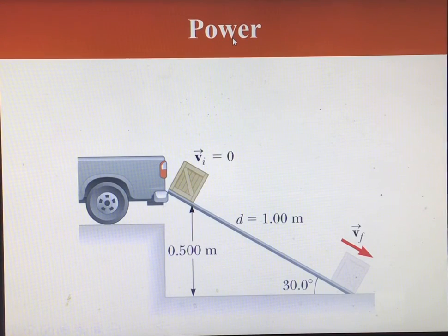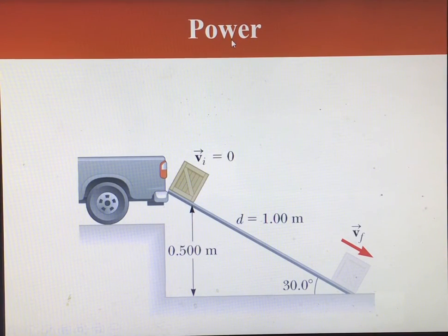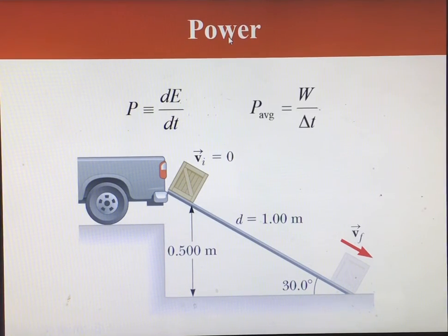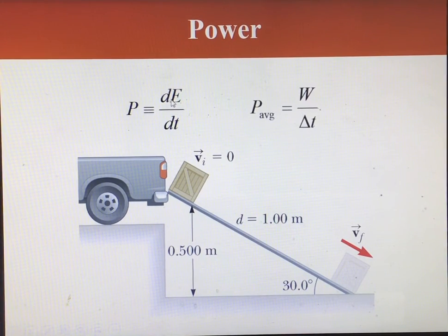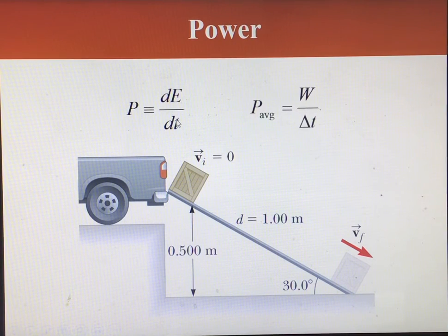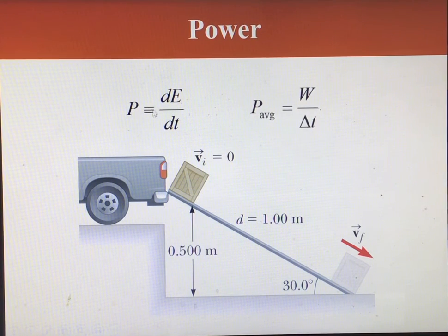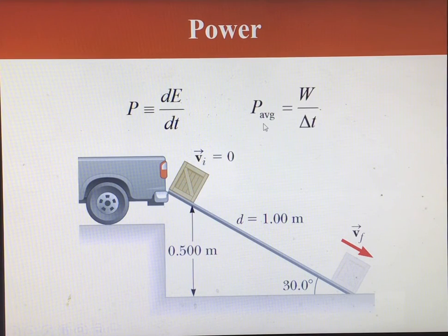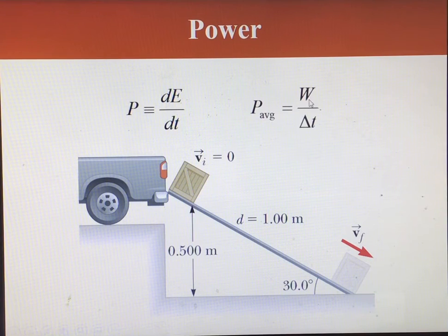We're going to wrap up chapter 8 by looking at power. By definition, power is just the change in the energy of a system as a function of time. This is called the instantaneous power — it's the derivative of the energy with respect to time. The average power is just the work over the change in time.